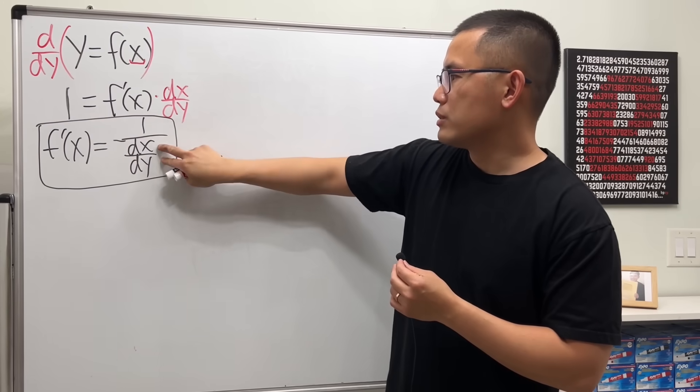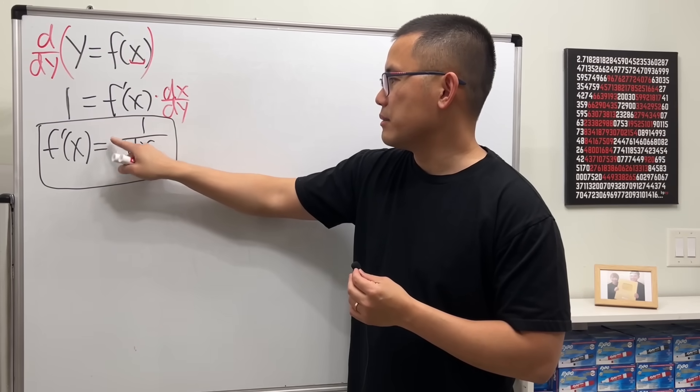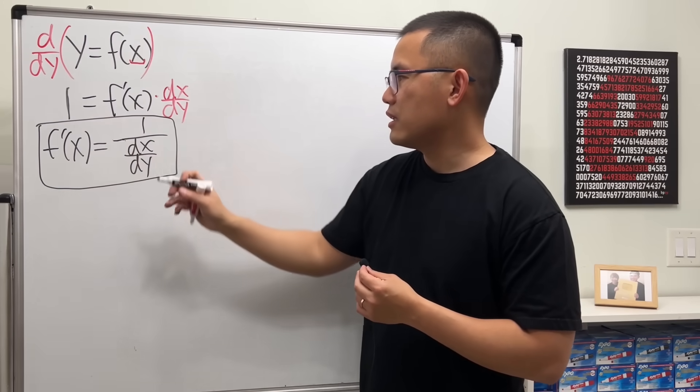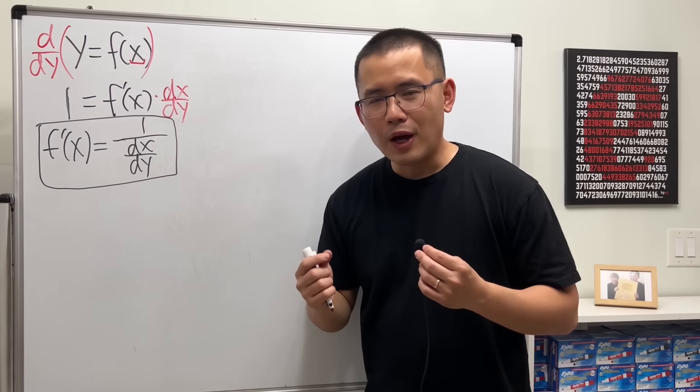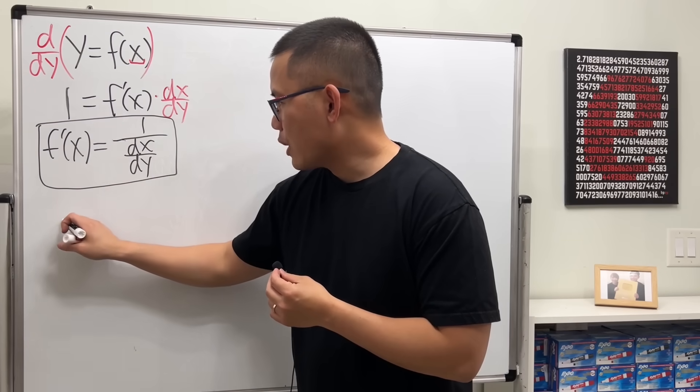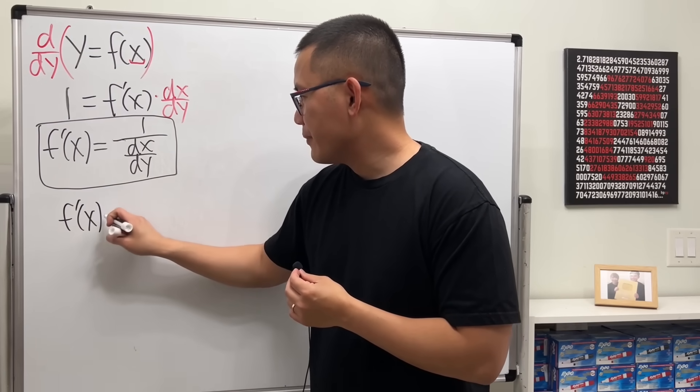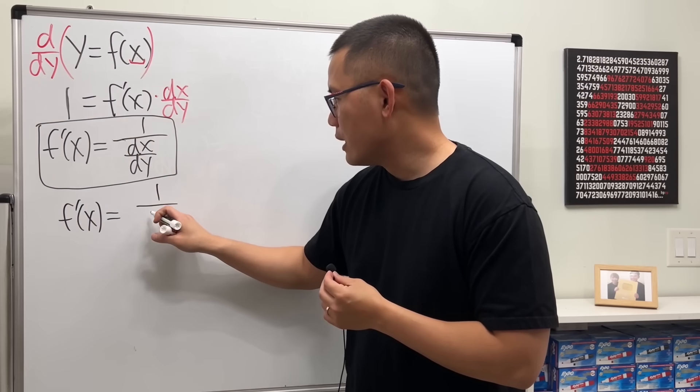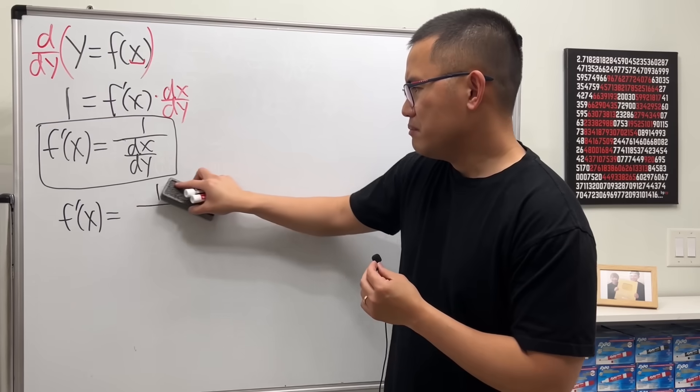And I know you guys might want to just like flip that and say that's the same as dy/dx of x, kind of. But now how about let's go to the second derivative and see what happens? So I'm going to start with f prime of x equals 1 over dx/dy.